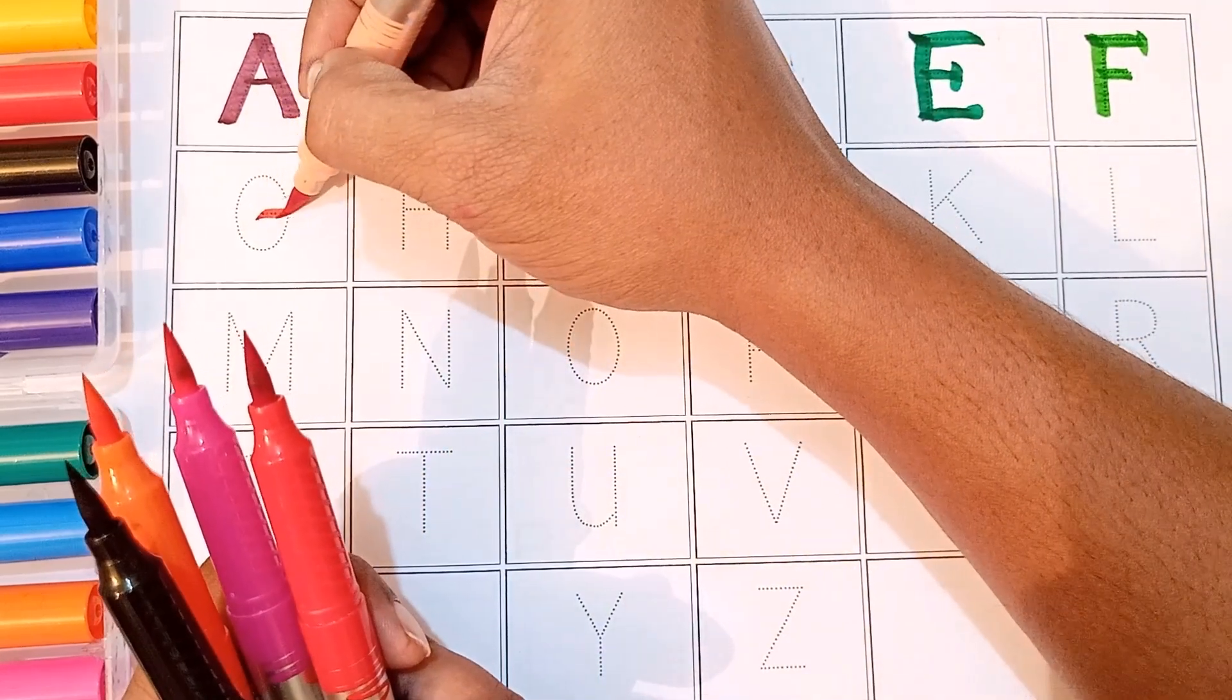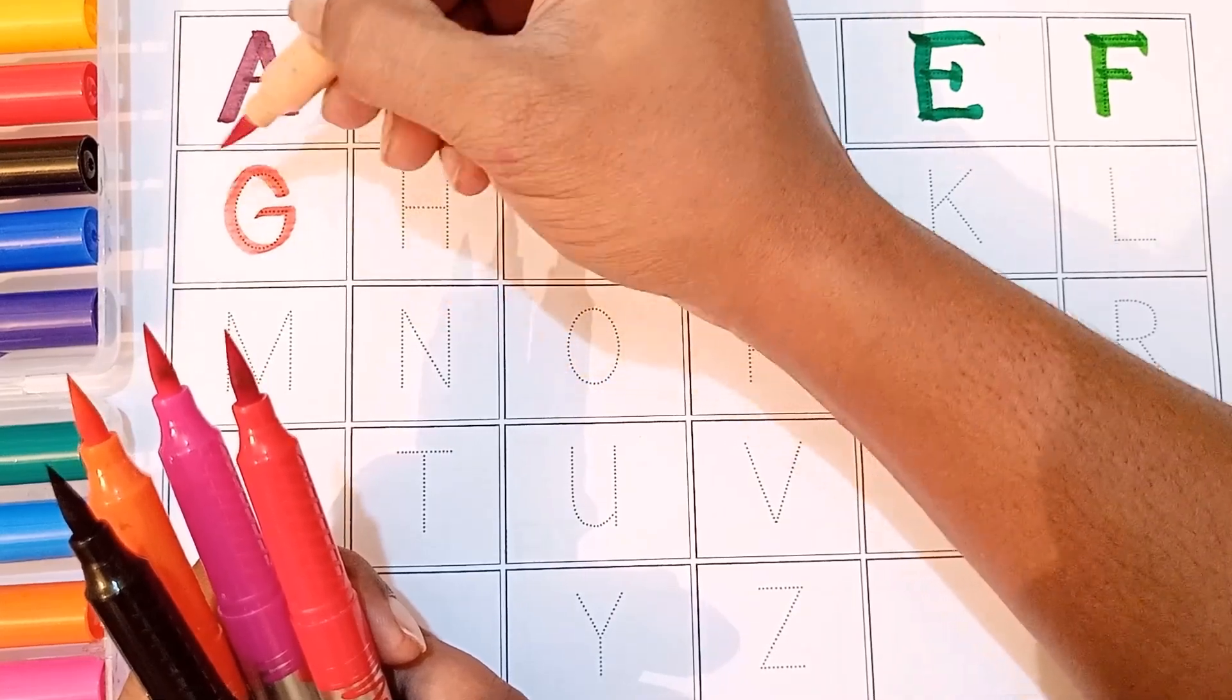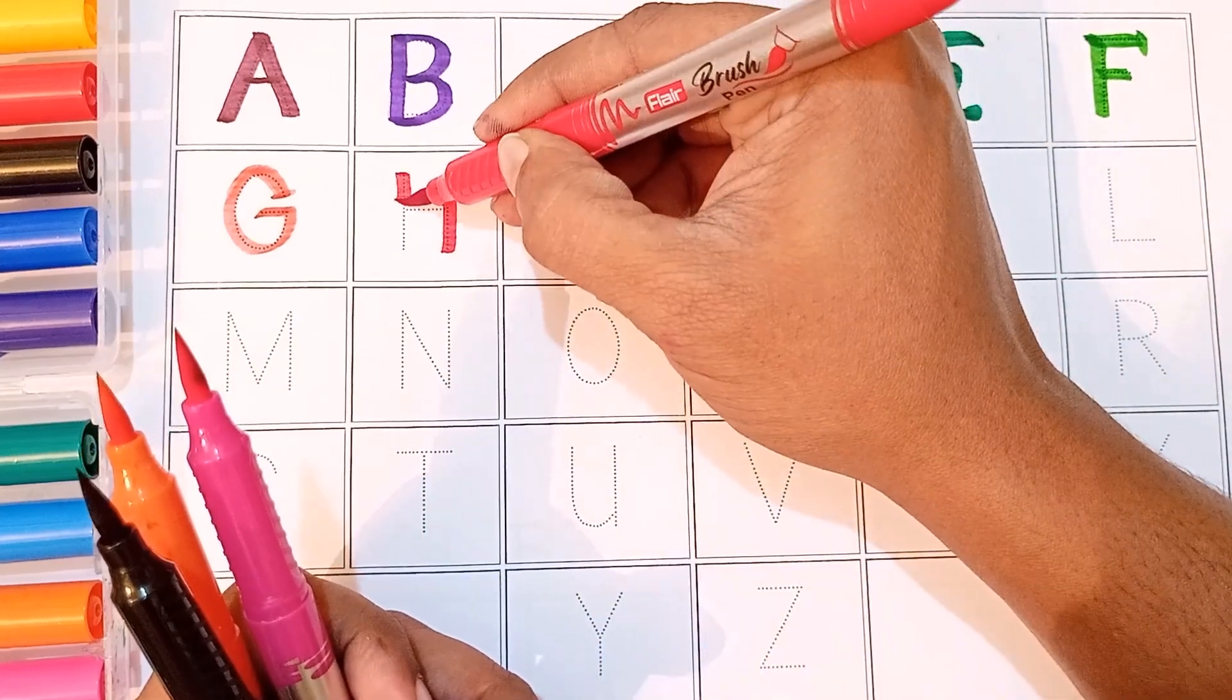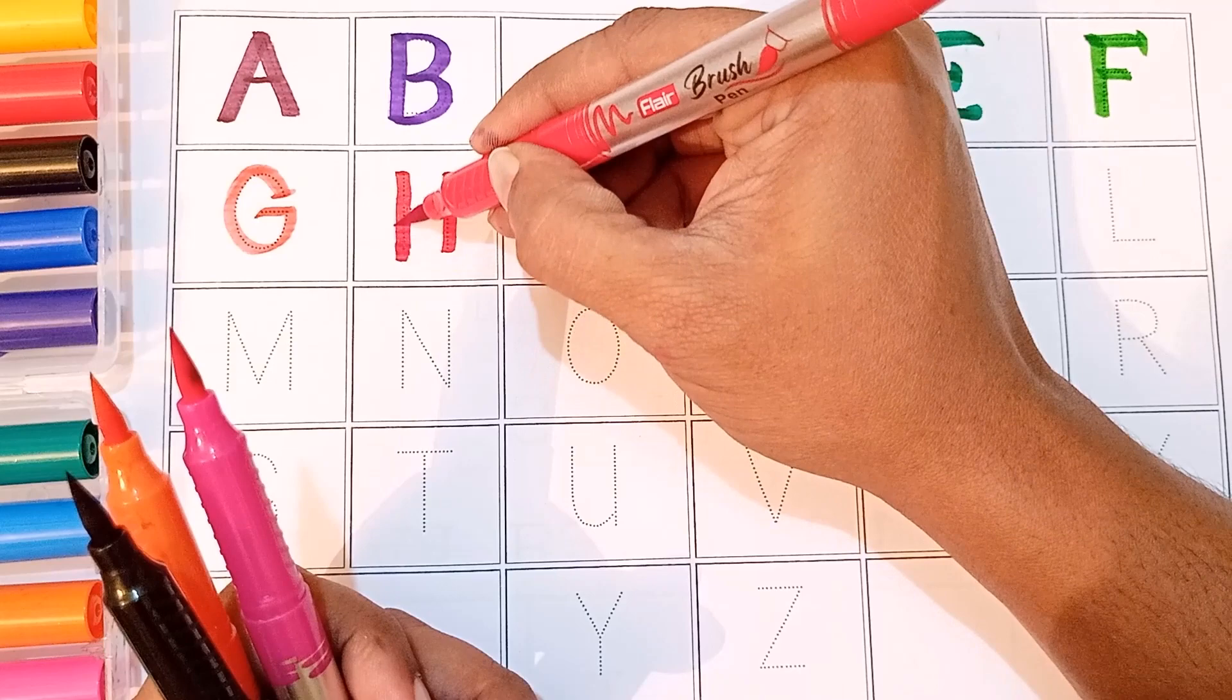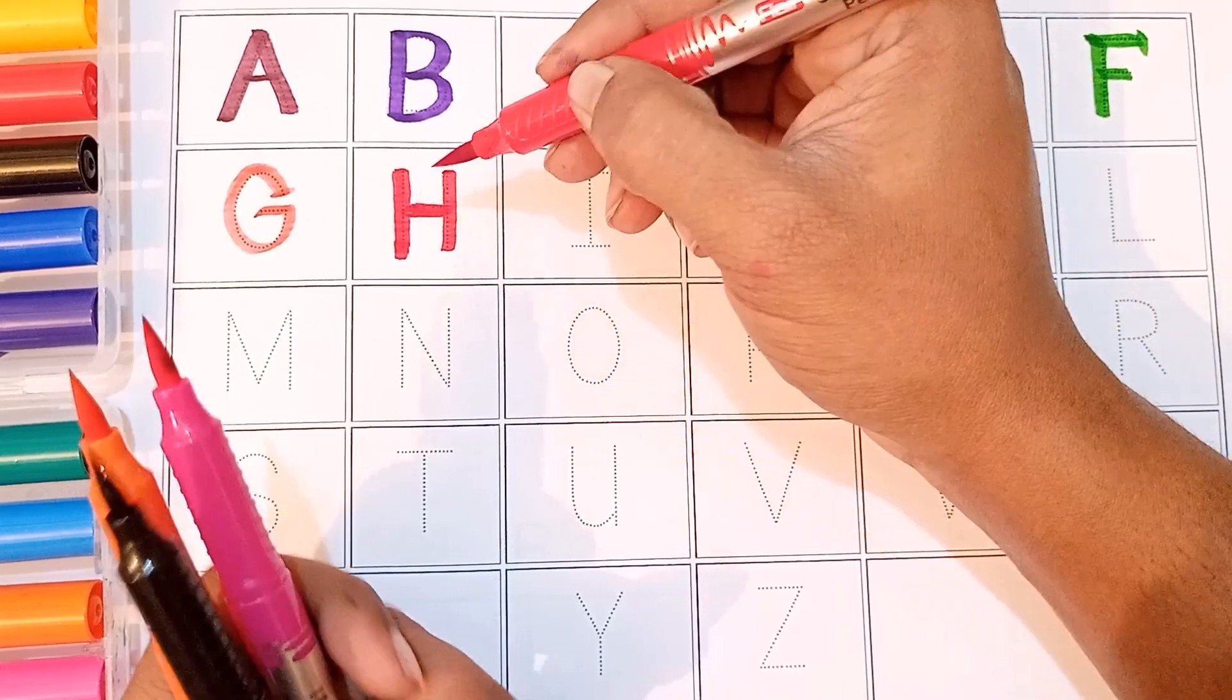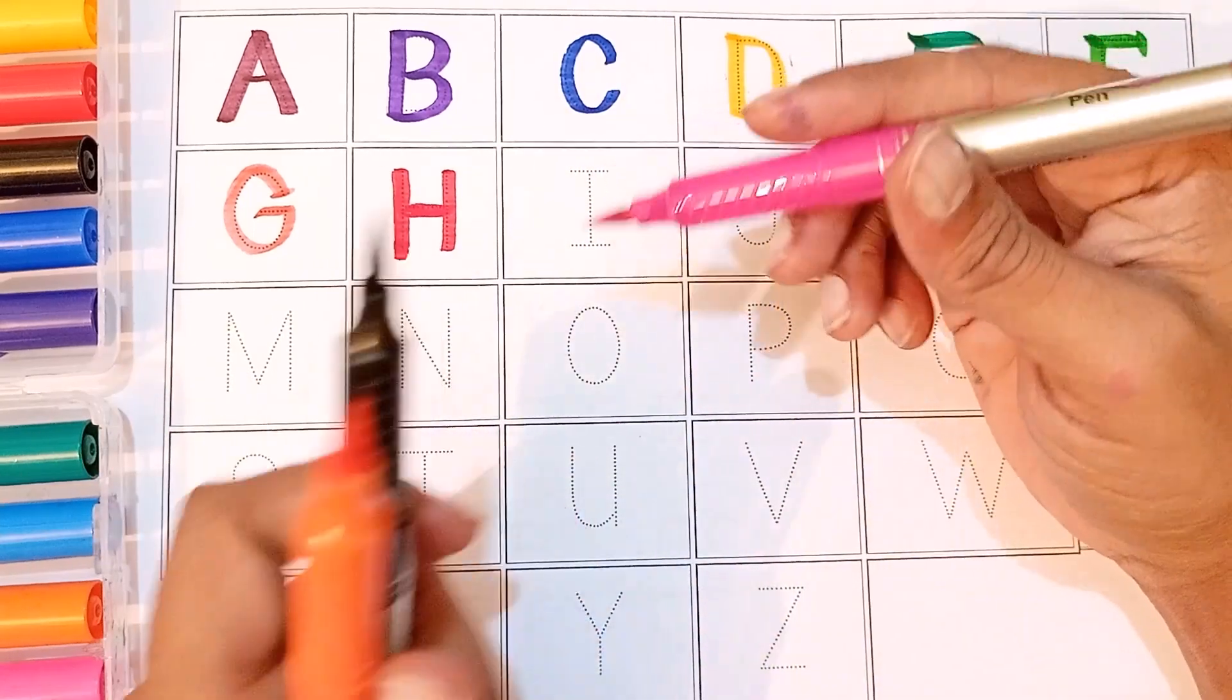F, F for fish. F for fish. G, G for god. G for god. G for god. H, H for kya hote hai bachyo? Aap jante ho? H for kya hote hai? H for house. H for house, hote hai. H for horse, hote hai. Wow! Everything, sorry, sorry. H for horse.